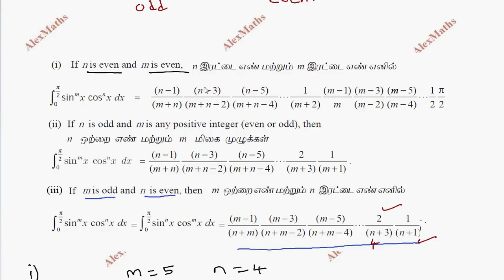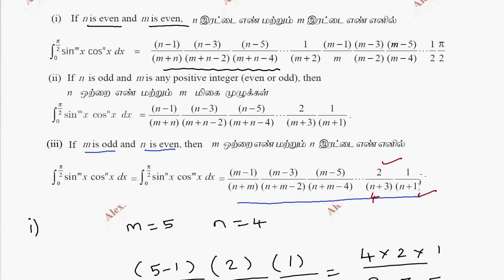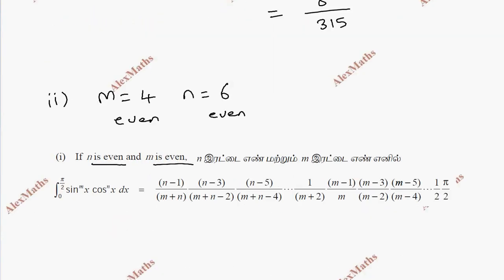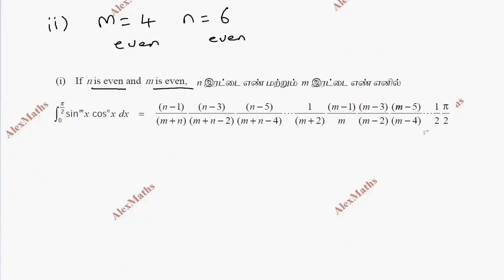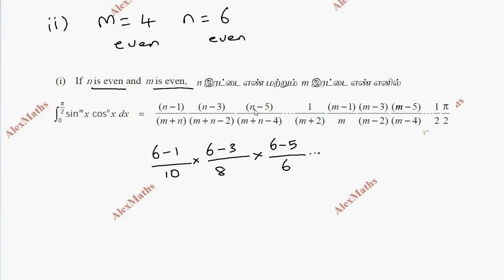The even formula exists here with m and n both even. n is even, so we will use this formula and substitute. n minus 1 gives 6 minus 1; divided by 10, into n minus 3 gives 6 minus 3, divided by 8; into n minus 5 gives 6 minus 5, divided by 4, subtract 10 plus 6, and so on. Then we go to 1 divided by m plus 2, where m equals 4.